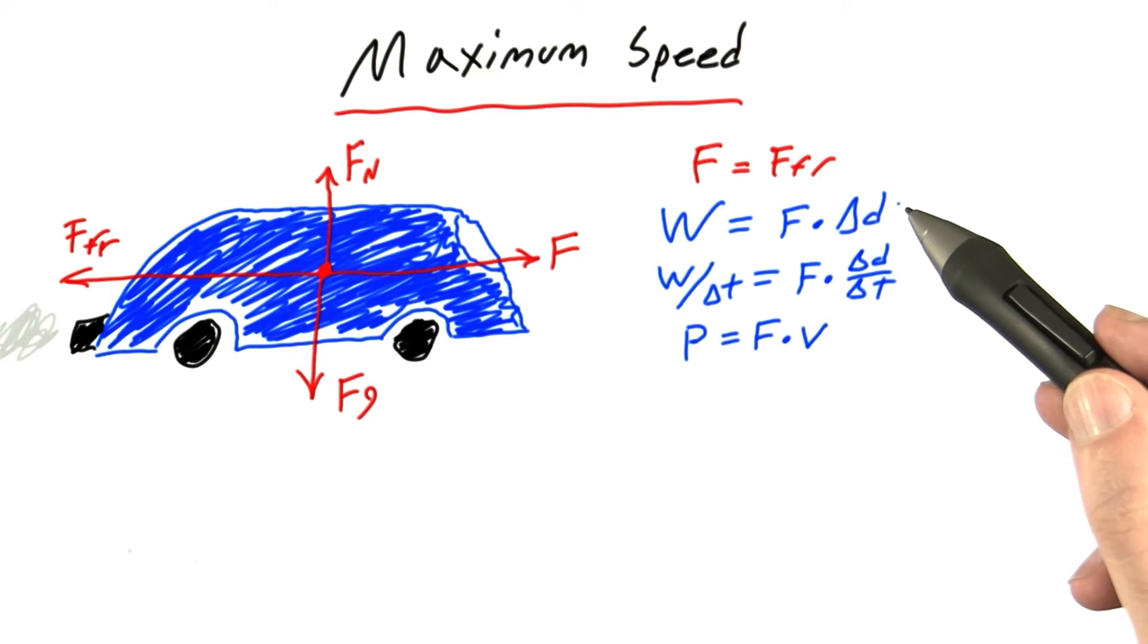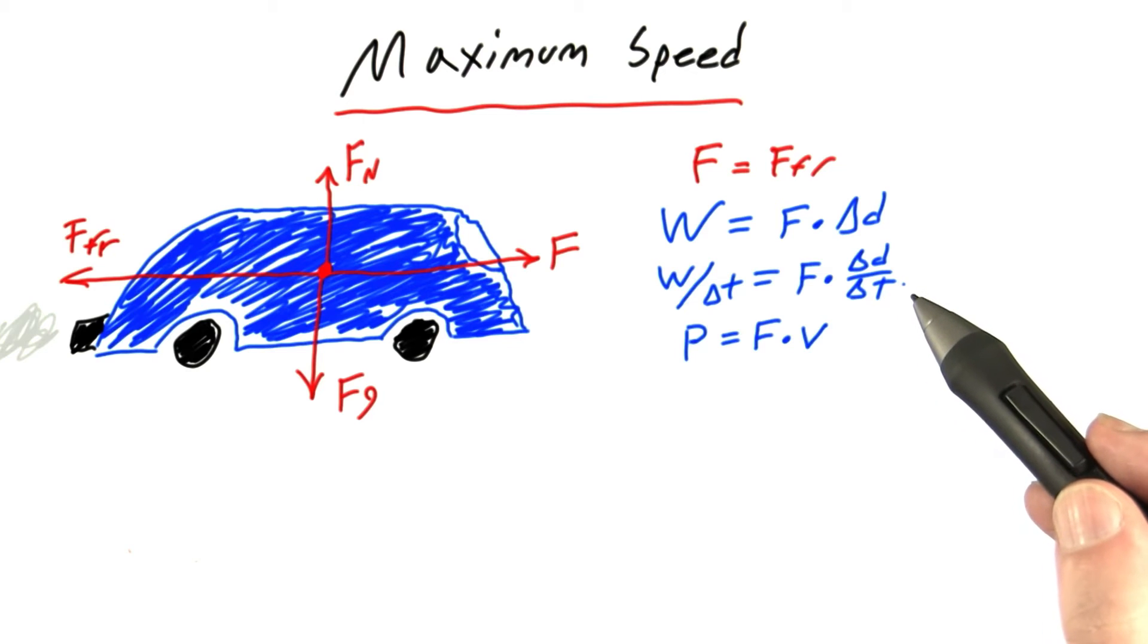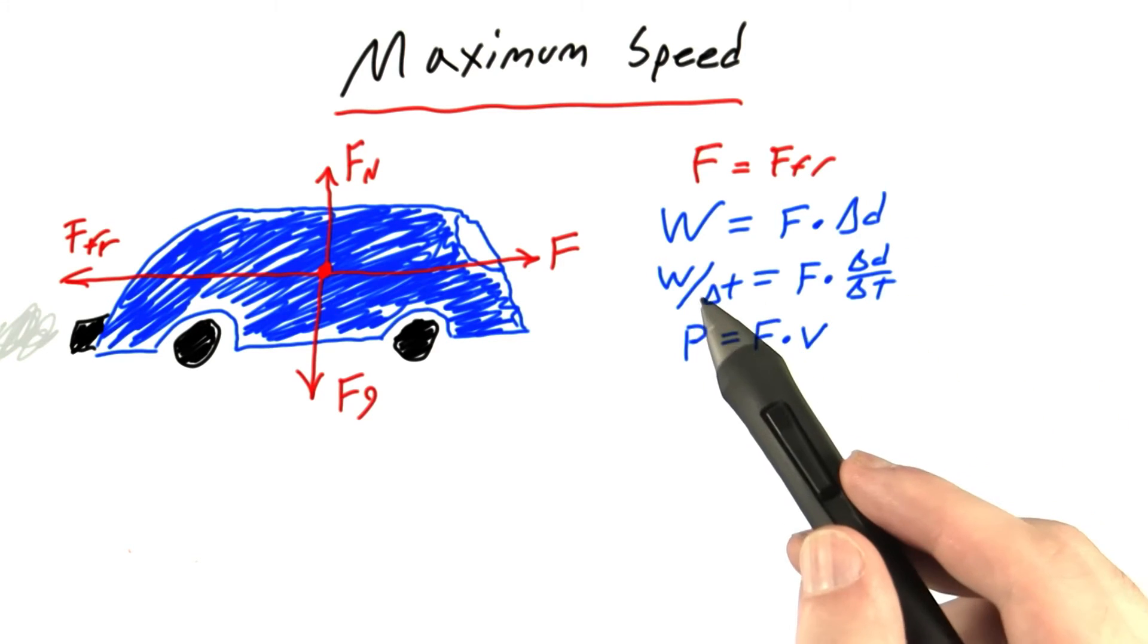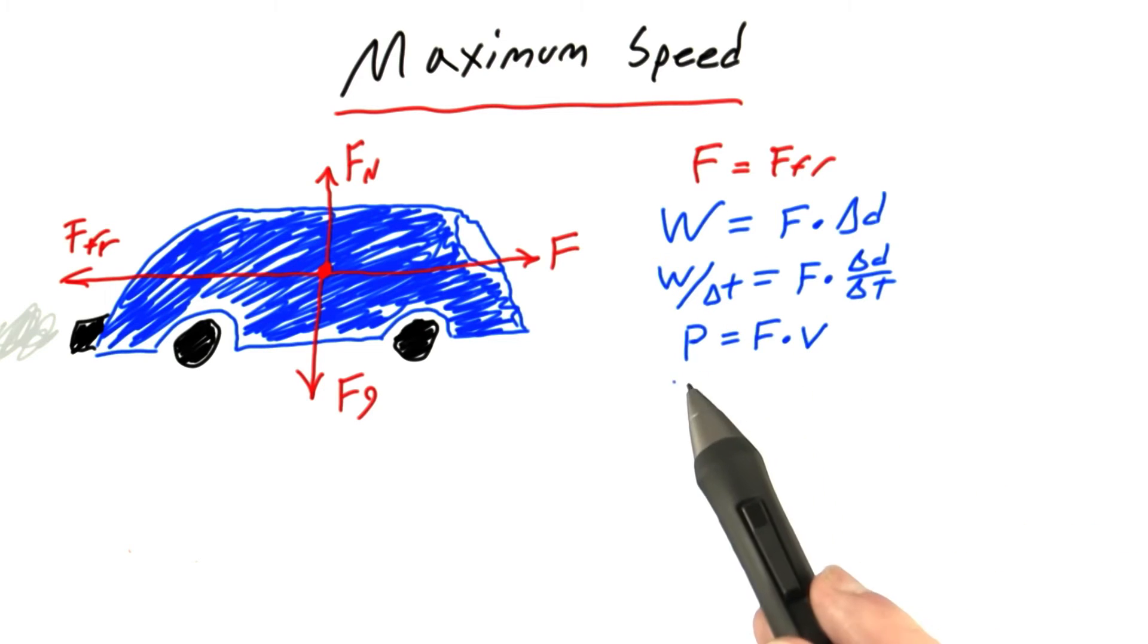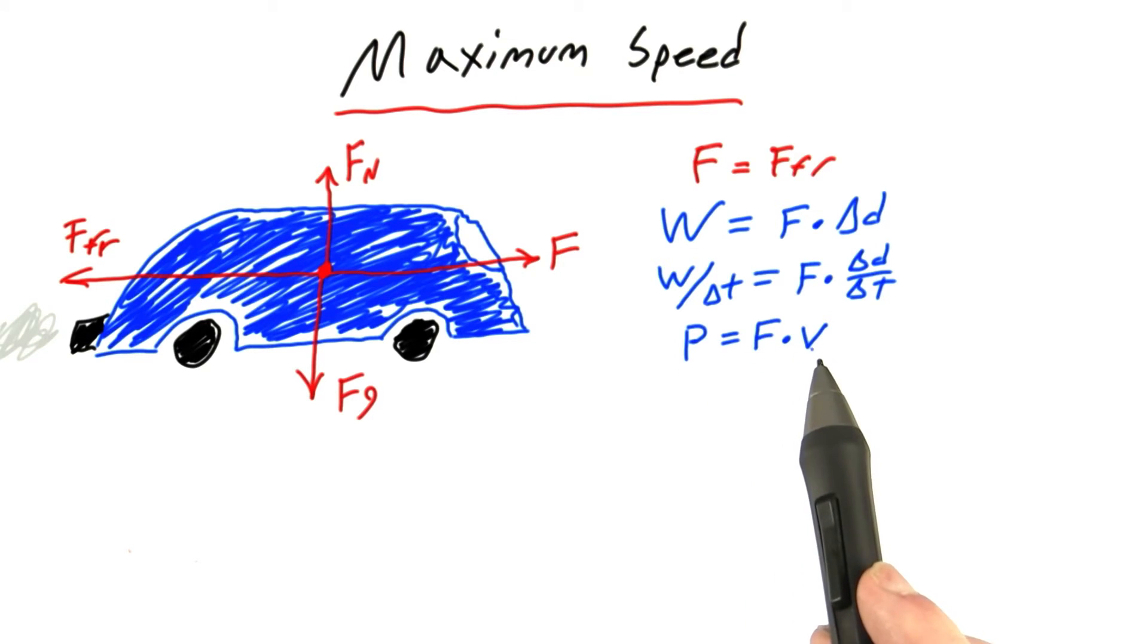So starting with the equation for work, I divide both sides by delta t. And you'll note that this term delta d, the change in position over the change in time, well that's just the same as velocity. And also over here, work divided by change in time, that's just the same thing as power. So we get this nice equation that power is equal to the force pushing the car forward times its velocity.